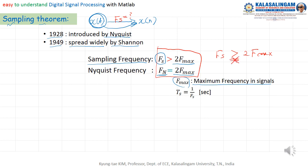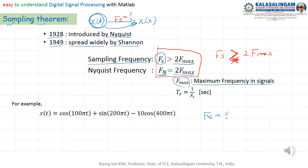One example: X of t is given here. From this cosine of 100π·t, this means 2π·F·t. So we can know F equals 100 Hz. And from the second term, we can know F equals 200 Hz.